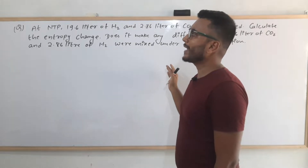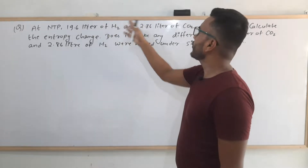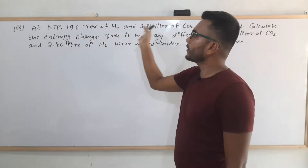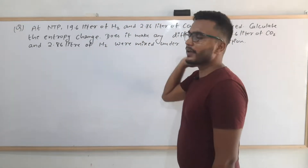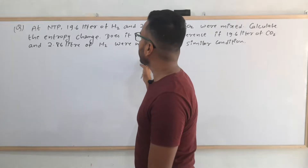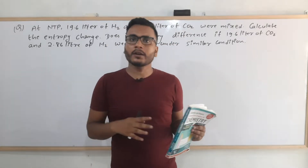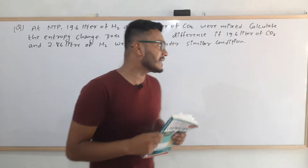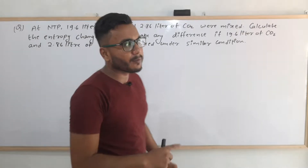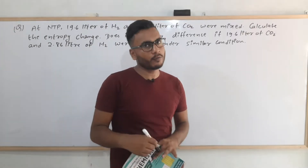First, we need to calculate the entropy of mixing of hydrogen and carbon dioxide when their volumes are given. In the second case, we calculate the entropy of mixing under similar conditions but with the volumes interchanged. Then we check whether there is any difference in the entropy of mixing.